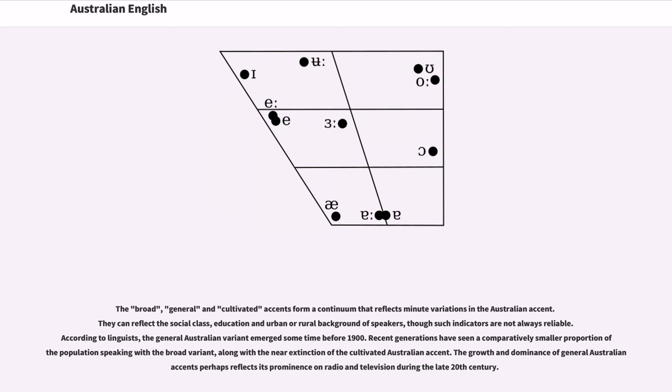The broad, general and cultivated accents form a continuum that reflects minute variations in the Australian accent. They can reflect the social class, education and urban or rural background of speakers, though such indicators are not always reliable. According to linguists, the general Australian variant emerged sometime before 1900. Recent generations have seen a comparatively smaller proportion of populations speaking with the broad variant, along with the near extinction of the cultivated Australian accent.